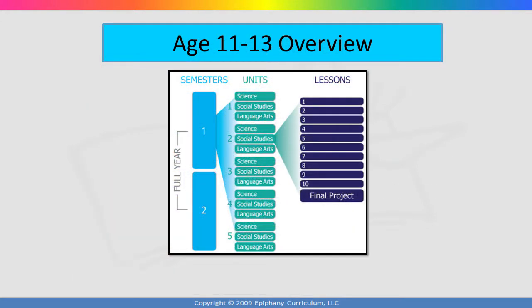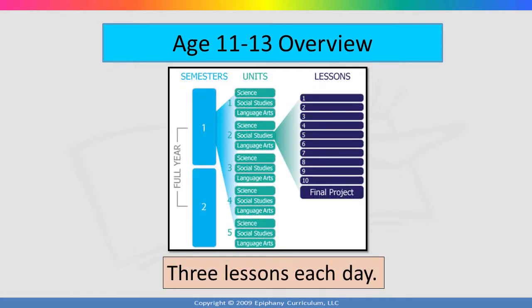The age 11 to 13 level is one year of academic instruction. The year is divided into two semesters, each comprised of five science units, five social studies units, and five language arts units. Each unit has about 10 lessons and a final project. All you need to know is this: do three lessons each day — one lesson from science, one from social studies, and one lesson from language arts.